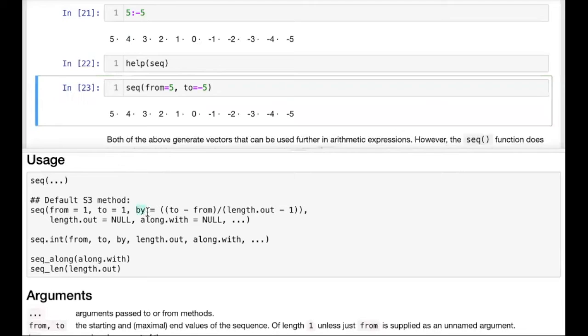The by argument we see below in the help can actually be used to specify the step size or the amount that we want to increment or decrement to get the next value in the sequence. So far, we've used a default of 1 or negative 1, but we can specify a different value using this argument.